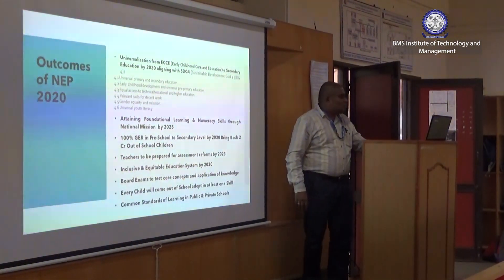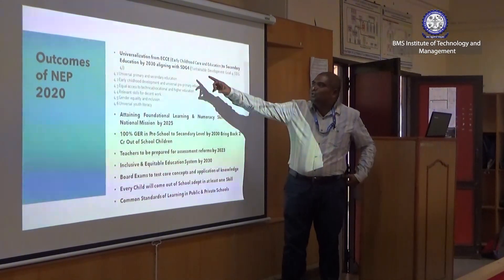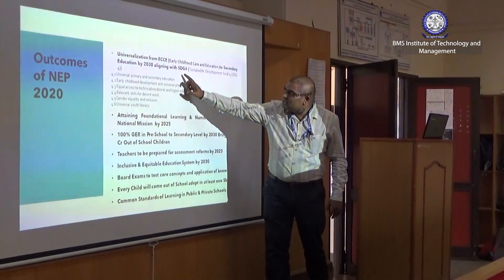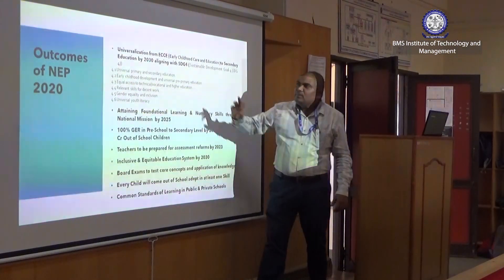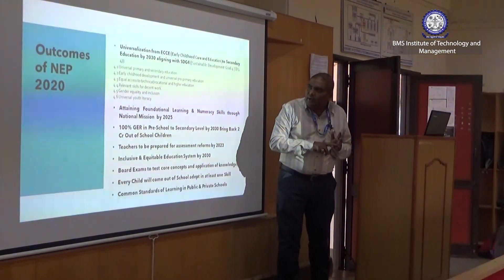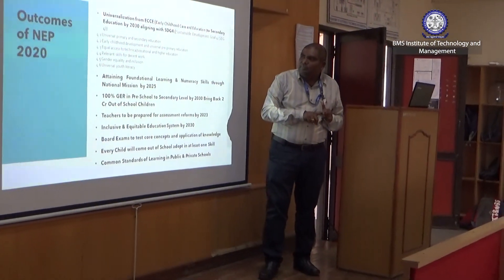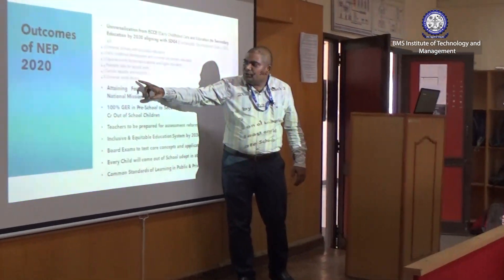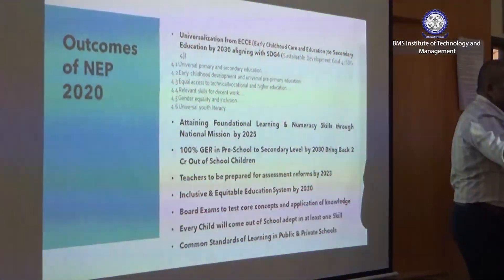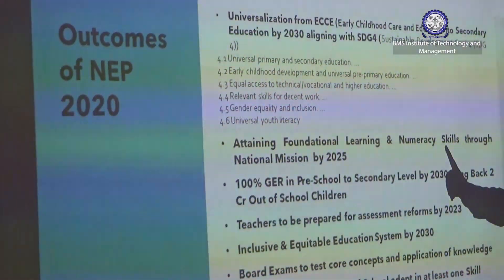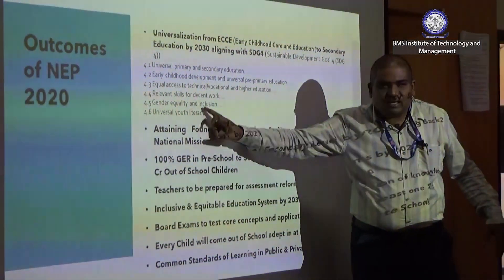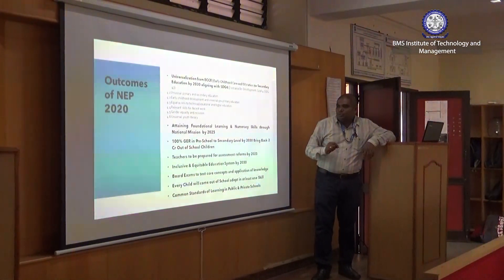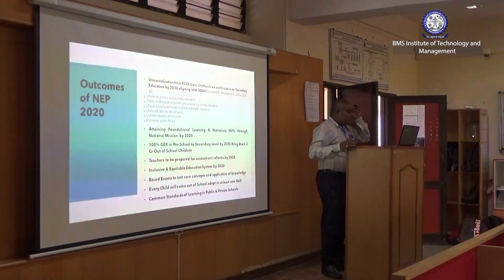Next are the outcomes of NEP. Attaining early childhood care and education to secondary education by 2030. This relates to Sustainable Development Goal 4 — SDG 4. The goals include universal primary and secondary education, early childhood development, equal access to technical, vocational, or higher education, relevant skills for decent work, gender equality and inclusion, and universal youth literacy. Attaining foundational learning and numeracy skills through a national mission by 2024, and an inclusive and equitable education system by 2030.